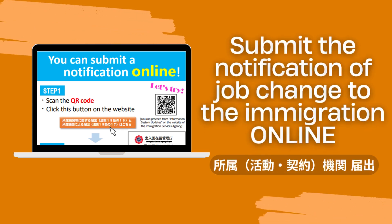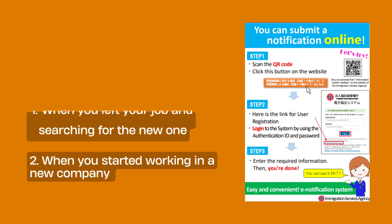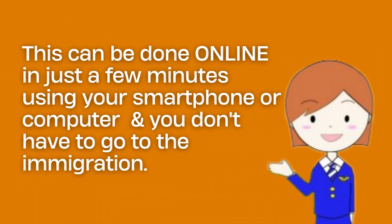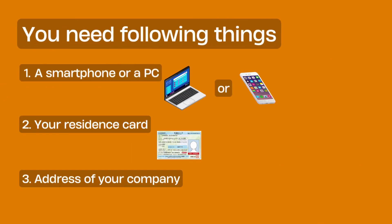Submit the notification of job change to immigration using the online system. In Japan, you need to submit the notification to immigration within 14 days when you leave your job and when searching for a new one, and also when you start working at a new company. This can be done using the online system in just a few minutes using your smartphone or computer, and you don't have to go to the immigration office. You need to prepare the following things first.